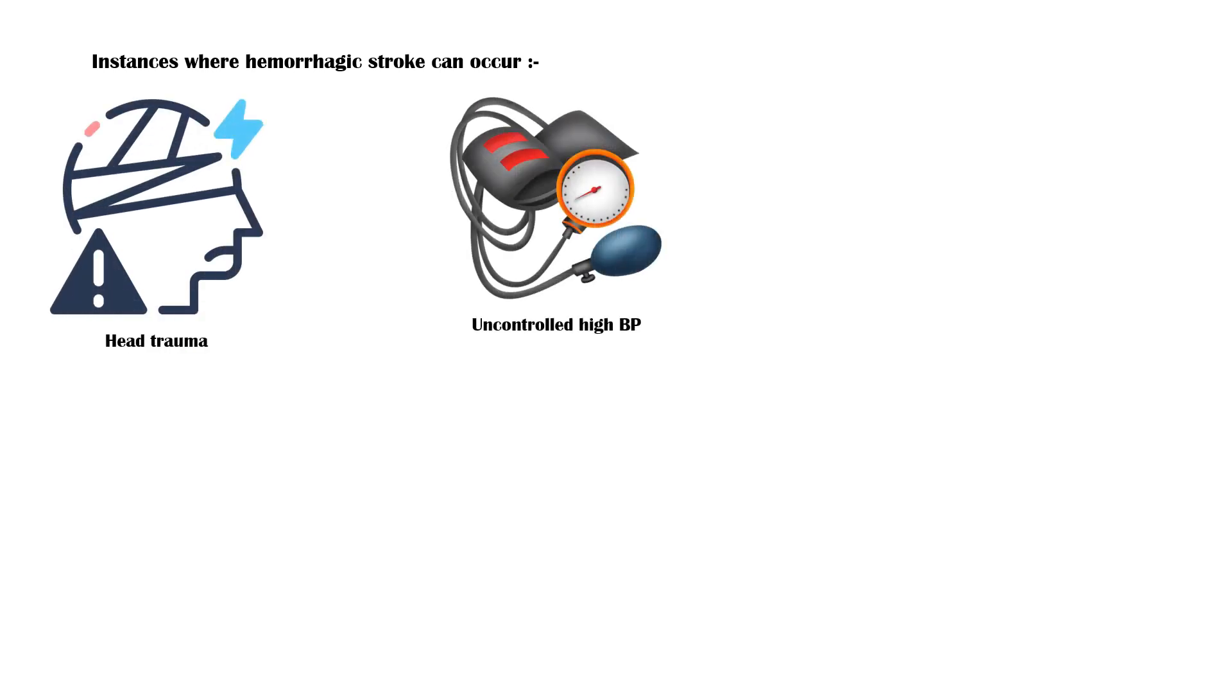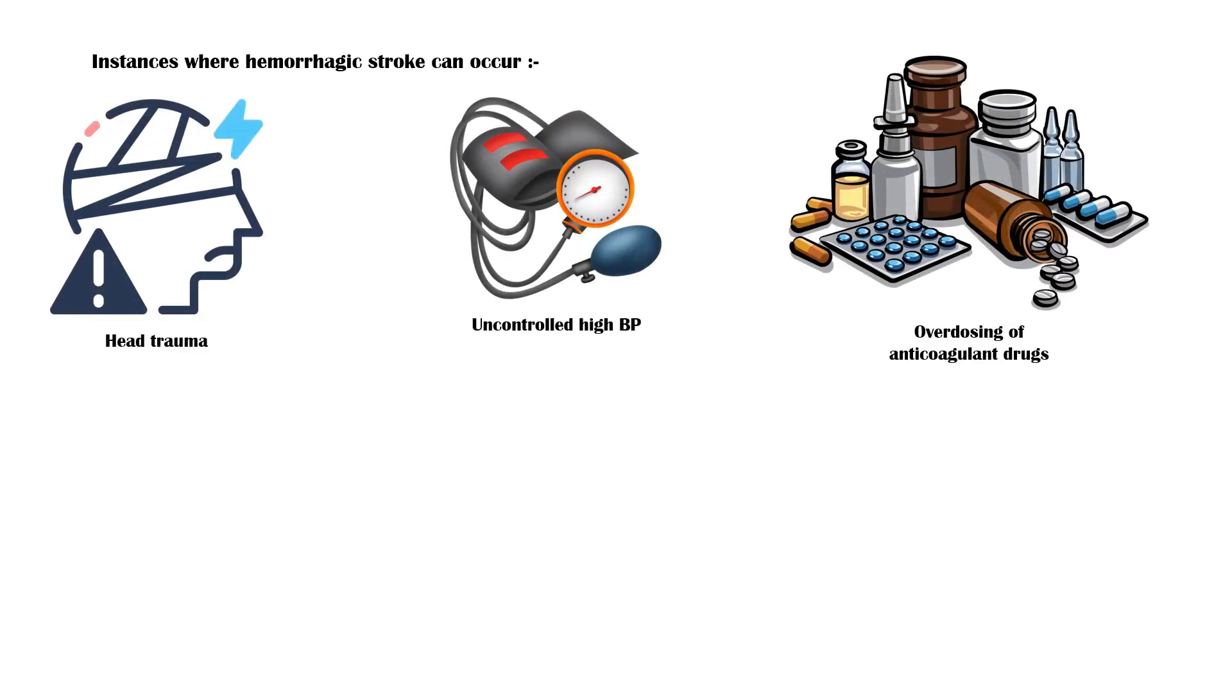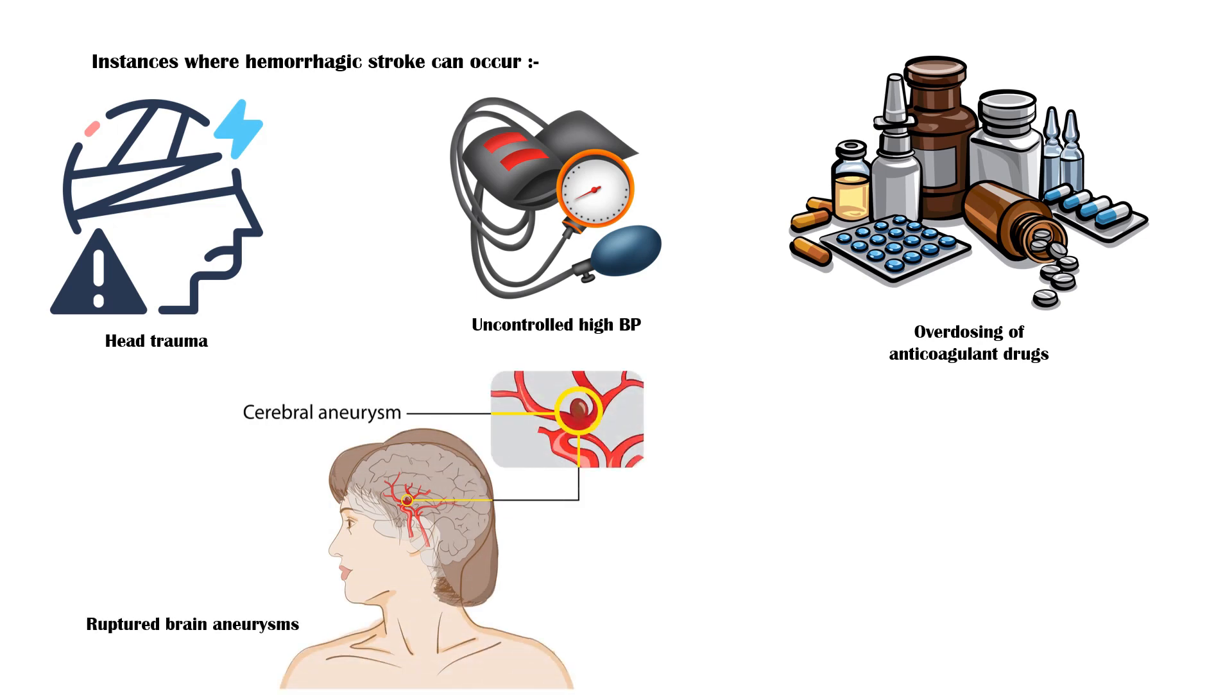Common instances where hemorrhagic strokes can occur include head trauma, uncontrolled high blood pressure, overdosing of anticoagulant drugs, ruptured brain aneurysms, and cerebral amyloid angiopathy.